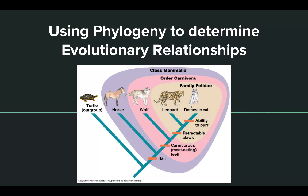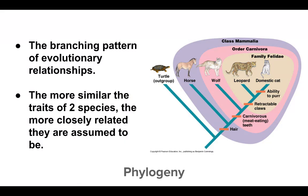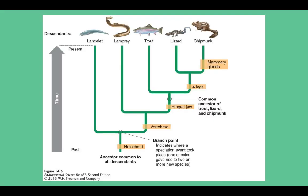Moving on to phylogeny — a phylogeny is just this branching diagram, and you've probably seen this in your biology classes. What we're looking at is that the more similar the traits, the more closely related two species can be. Scientists assemble these trees to indicate how different groups of organisms are related and show where speciation events have occurred — where species break off. The brown boxes indicate where major morphological changes evolved over time.